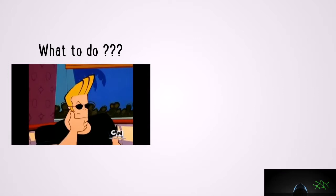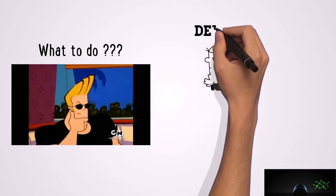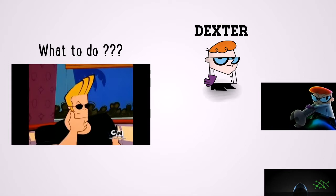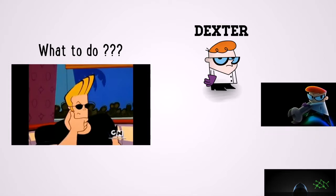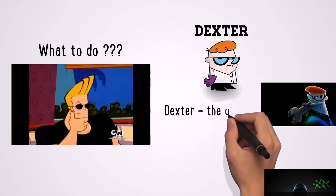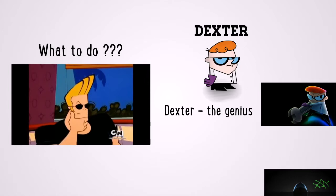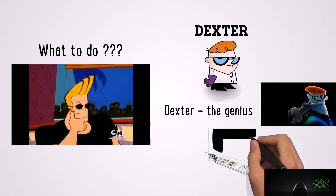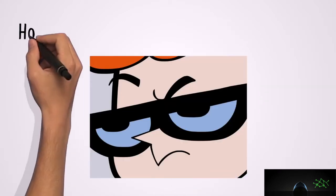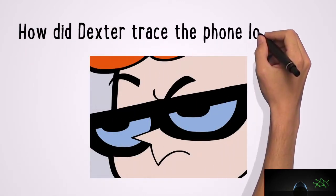He went to his friend Dexter — yes, Dexter the genius. Dexter is cybersmart. He goes to his lab, opens his server, and traces back Johnny's phone. But how did Dexter trace the phone location?